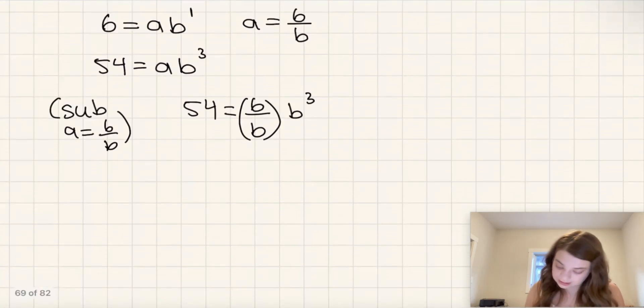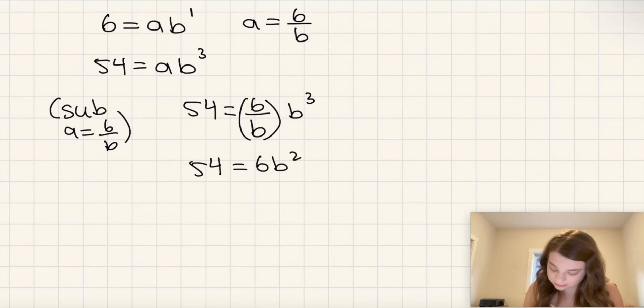So that means that 54 is equal to 6b squared, right? Because the b on the bottom here cancels with one of the b's here, essentially. So that's why that is.